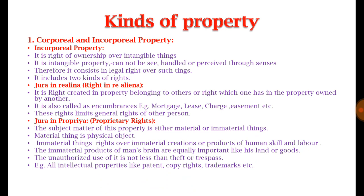The second right is jura in propria — this is the proprietary right over a particular thing, which may be material or immaterial property. When a person enjoys proprietary rights over material or immaterial things, such rights are called jura in propria. For material things, ownership, possession, and use are the proprietary rights available to the owner. Apart from material things, there are also certain immaterial properties over which a person can exercise proprietary rights.